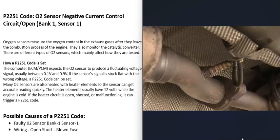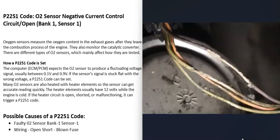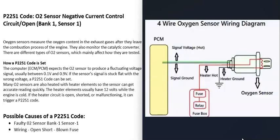The next thing that could cause this is some kind of issue inside the wiring — basically an open, a short, possibly a blown fuse, something along those lines. If you go to check the wiring, it's always a good idea to get a wiring schematic for your particular vehicle. There can be two-wire sensors, three-wire sensors, and four-wire sensors, which are fairly common.